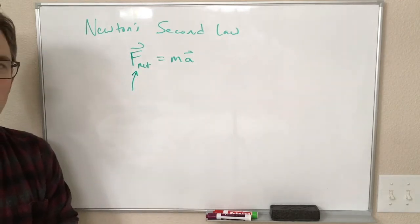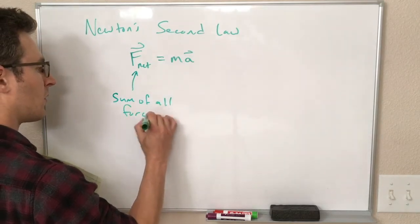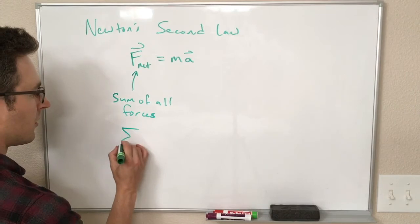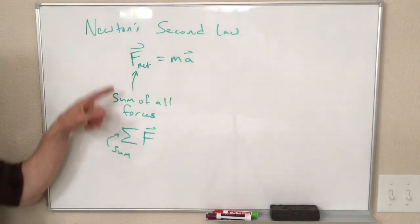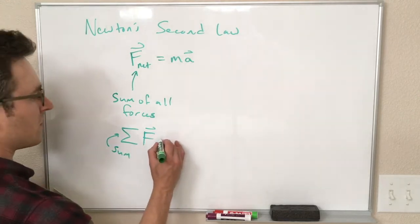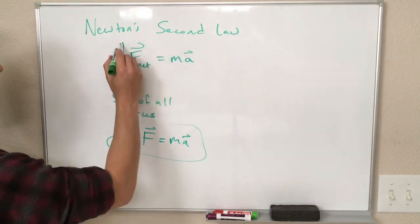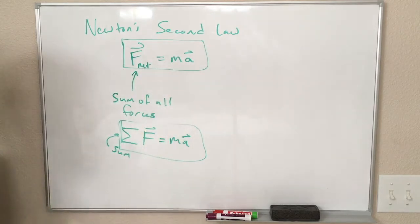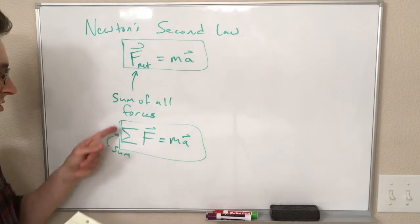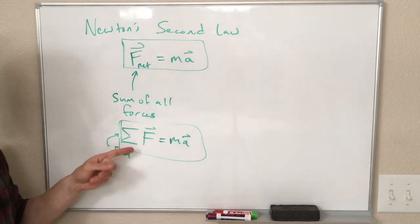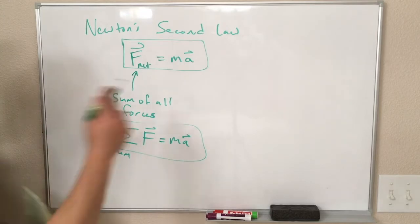So the net force, we can think of this as the sum of all of the forces on an object. We can write this with our summation symbol, sigma F is equal to ma. So if you add all the forces together, you're left with one vector, and that is this net force vector.